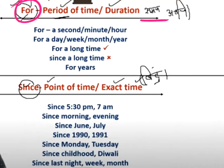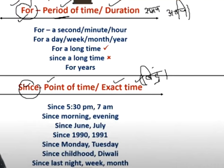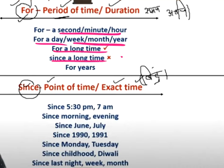For what we use — if we use time, like for a period or duration: for a second, minute, for an hour, for a day, for a week, for a month, for a year, for a long time. Since a long time is not 'for a long time' — for years.